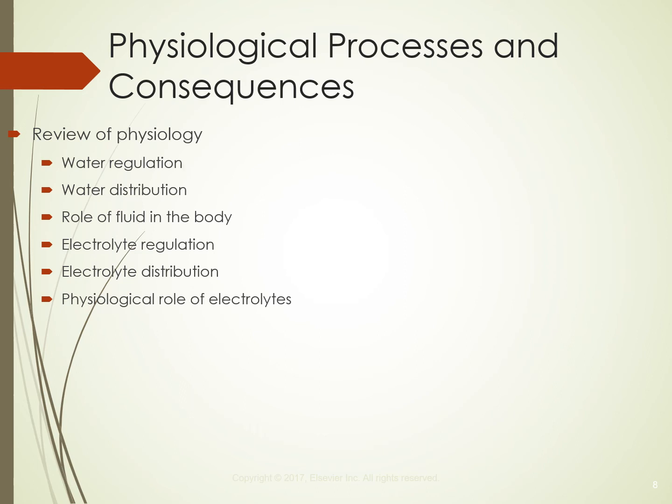Two hormones influence calcium distribution: parathyroid hormone (PTH) from the parathyroid glands, and calcitonin from the thyroid. Calcitonin moves calcium into the bone; PTH shifts calcium from the bone into the extracellular fluid. Unusual amounts of factors that shift electrolytes can alter their distribution and cause plasma electrolyte deficits or excesses.